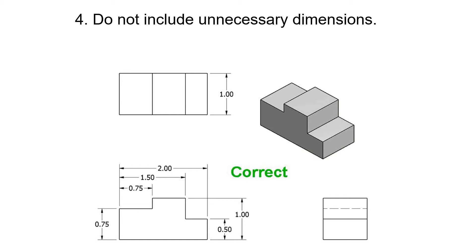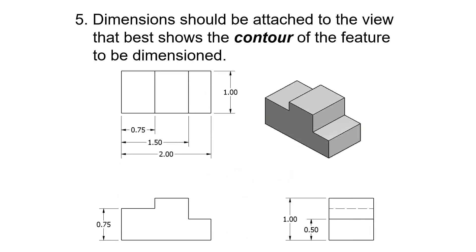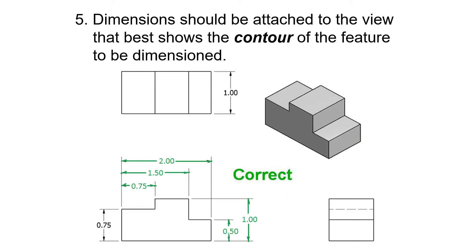Dimensions should be attached to the feature to be dimensioned. It just makes it easier if it's on the shape that shows the best contour. Normally that's the front view.